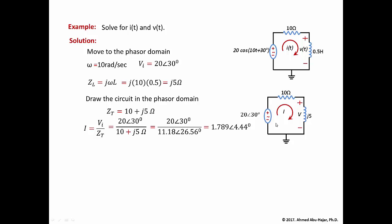This is the phasor current. We now convert it back to a time domain current I(t). The magnitude 1.789 is the cosine amplitude, 4.44° is the phase, and omega remains 10 rad/s. Therefore, I(t) = 1.789 cos(10t + 4.44°) amps.